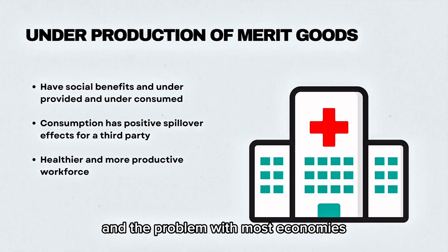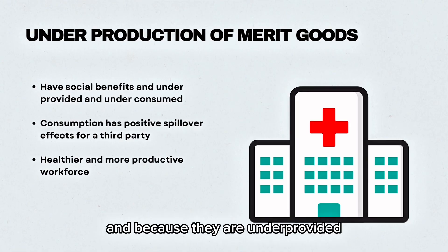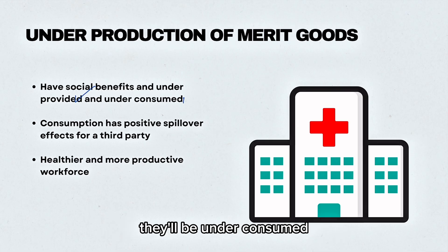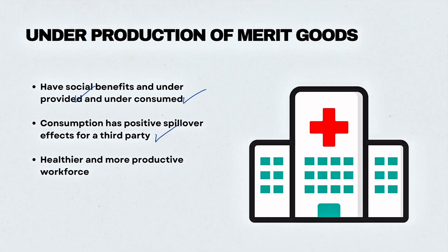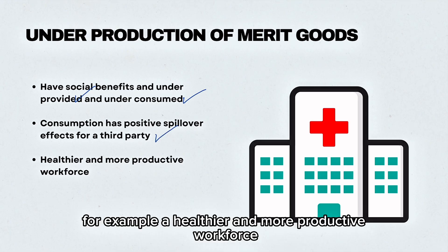The problem with most economies is that merit goods are underproduced, and because they are underprovided, they will be underconsumed. Consumption of merit goods has positive spillover effects for third parties — for example, a healthier and more productive workforce.